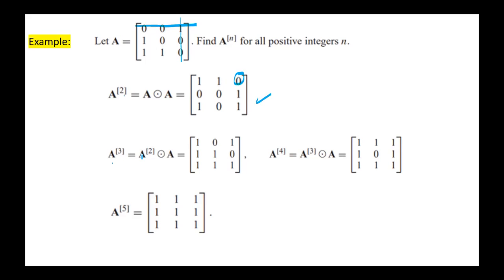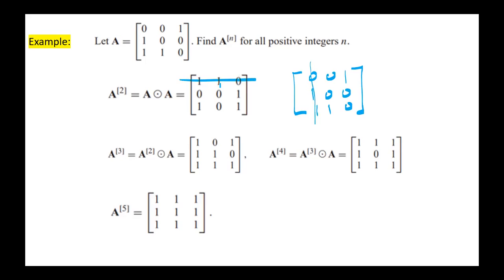A to the power 3 equals A² Boolean-product A. Multiplying by A, which is [0,0,1 / 1,0,0 / 1,1,0]: the first entry, first row by first column, gives 0 OR 1 OR 0, result is 1. The next element, first row by second column: 0 OR 0 OR 0, result is 0. We continue in the same manner.